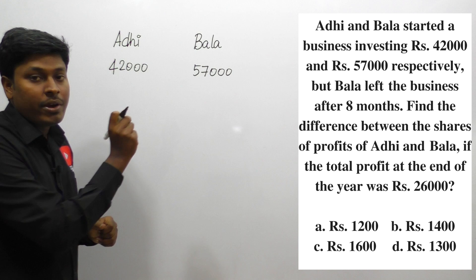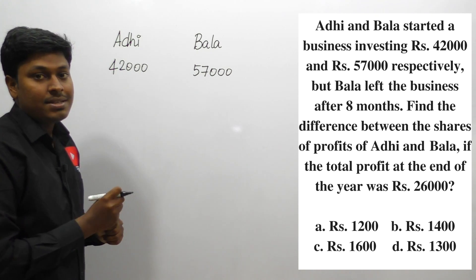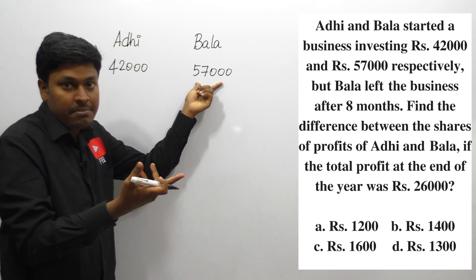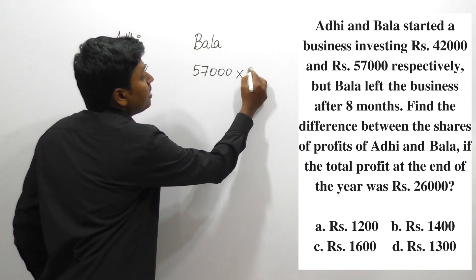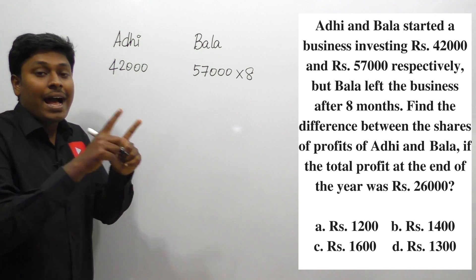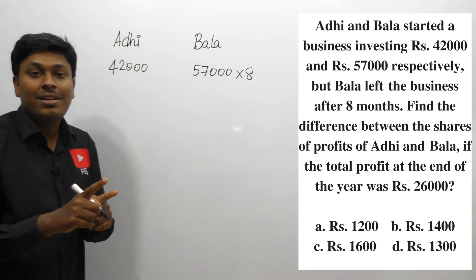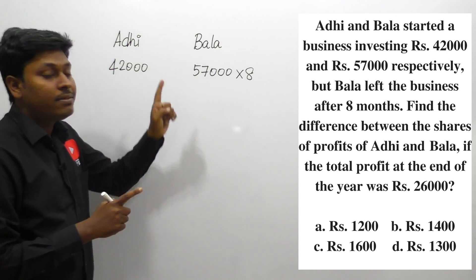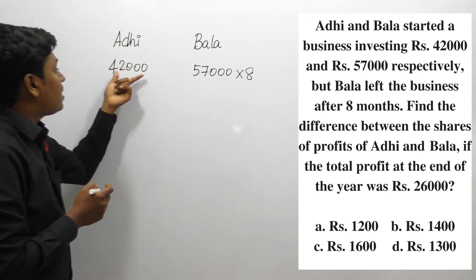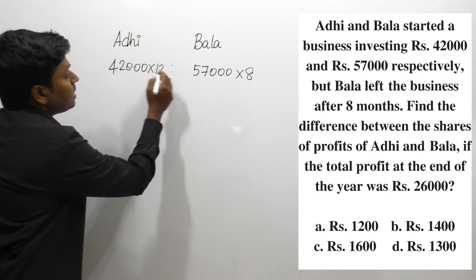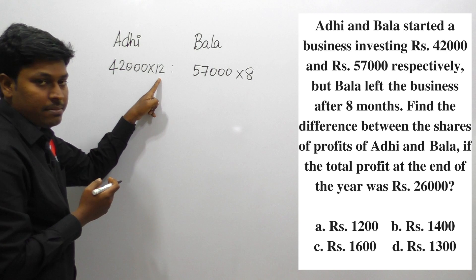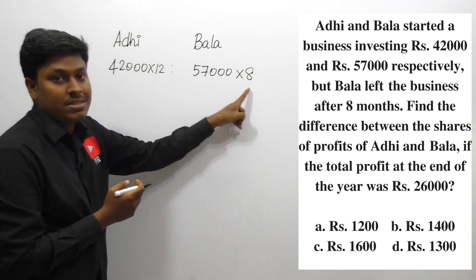The profit of 26,000 is for one year, that is 12 months. Now, Bala left the business after 8 months, so Bala was in the business for the first 8 months only. Therefore, Bala's contribution is 57,000 into 8 months. Adhi was in the business from start to end, so Adhi's contribution is 42,000 into 12 months.